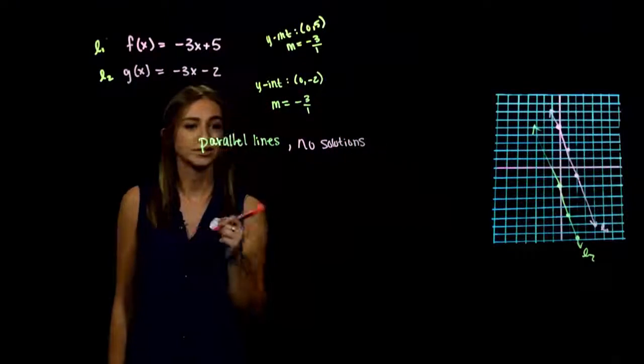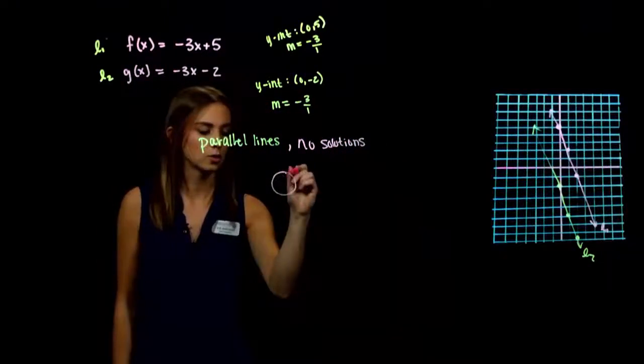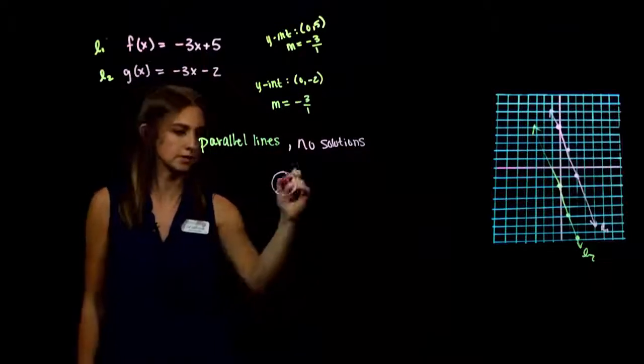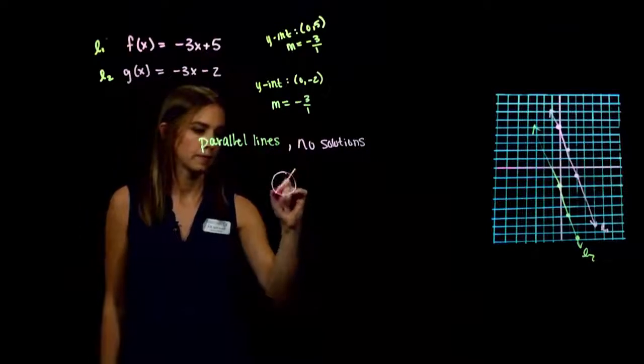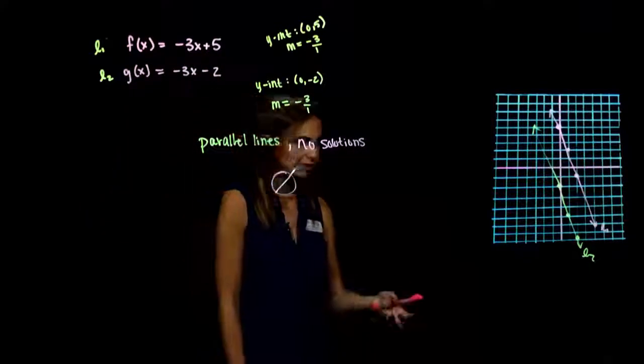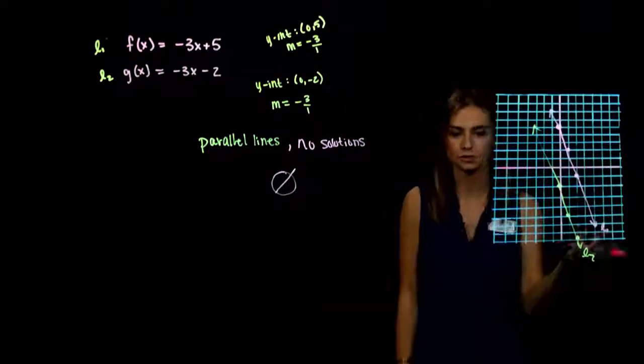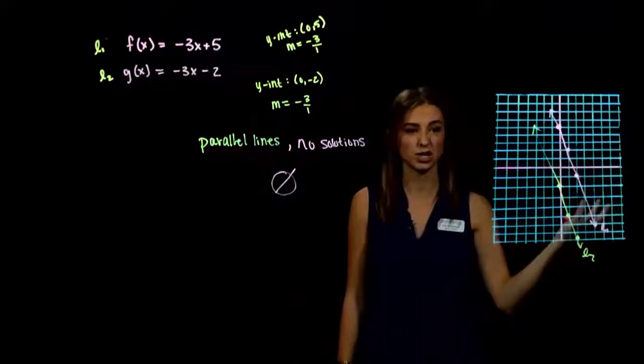Our set notation for no solution is the empty set — the circle with a line through it. Parallel lines as a system have no solutions.